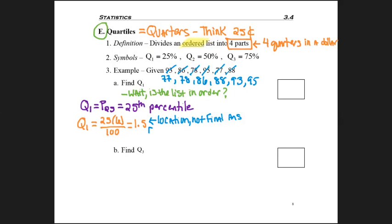Also, in this case, 1.5 is a decimal. So remember, we bump to the next location. So 1.5 would bump to number two, the second entry. So as I go up to the list, I find the second entry and that's my answer, 78.